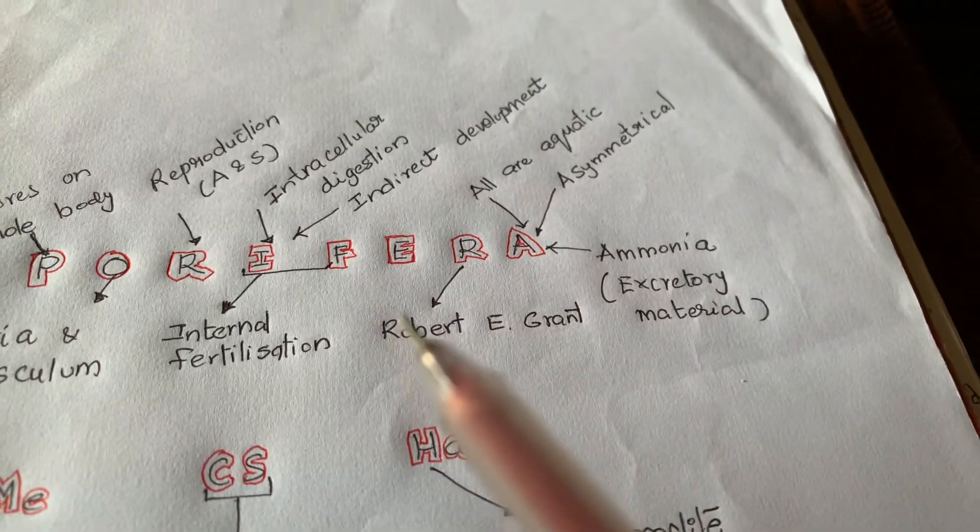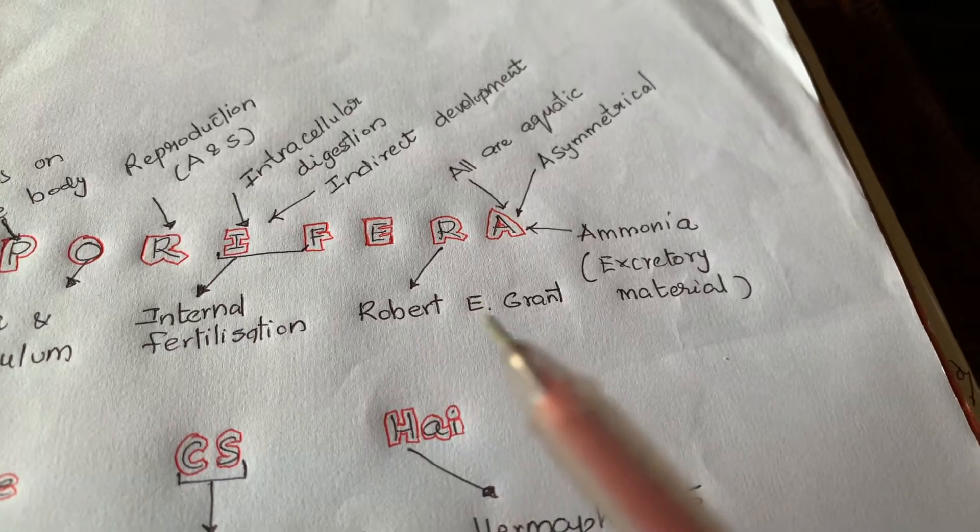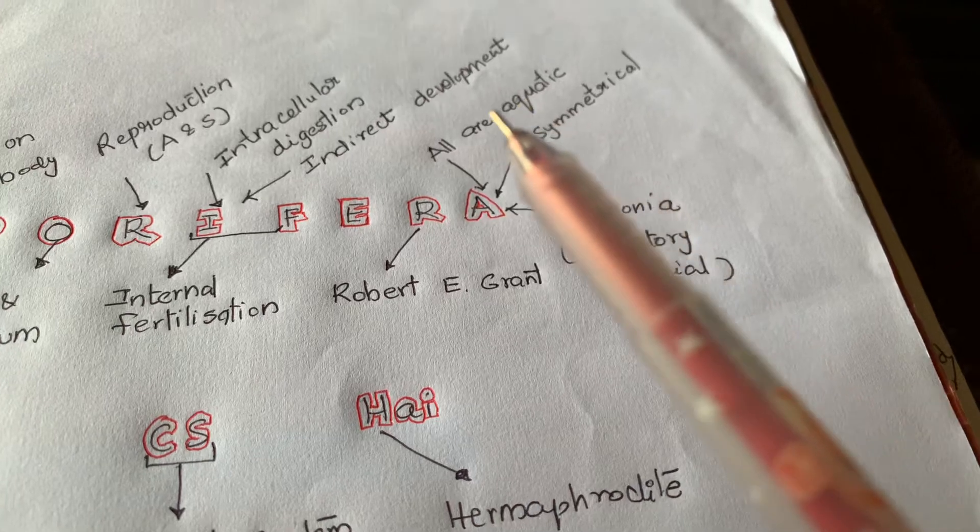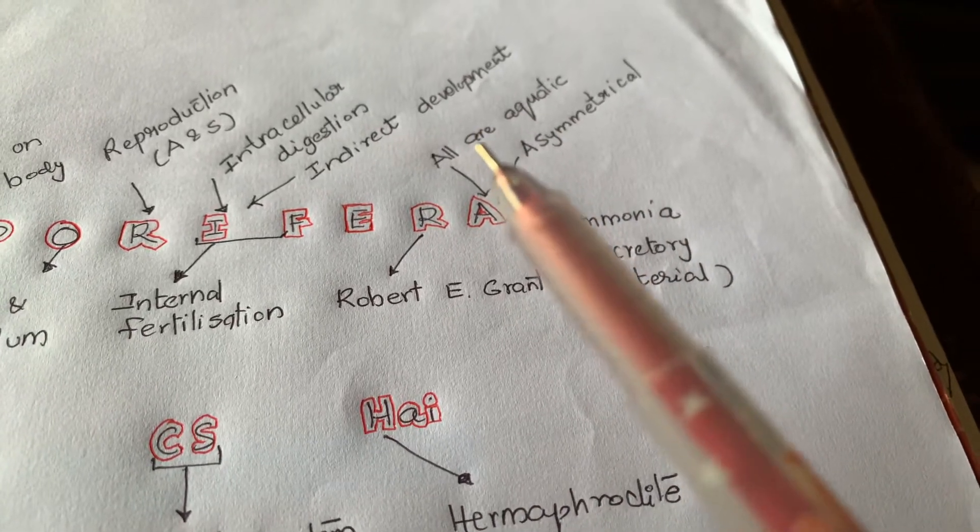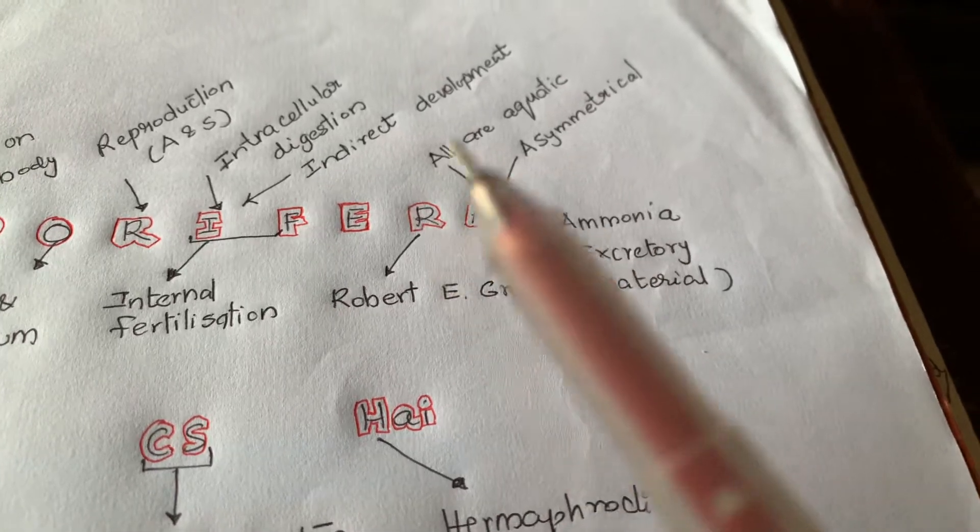And the Porifera name is coined by Robert E. Grant. And here, all the poriferans are aquatic, mostly marine, and very few are fresh water, like Spongilla.